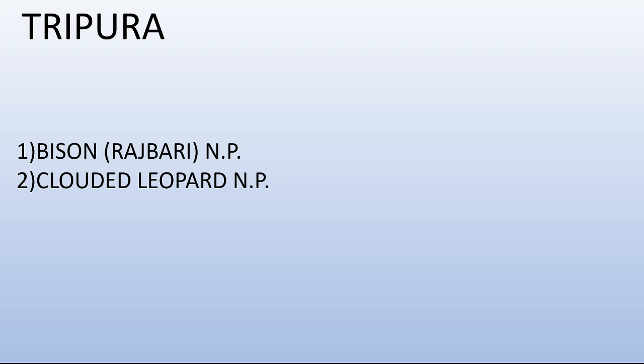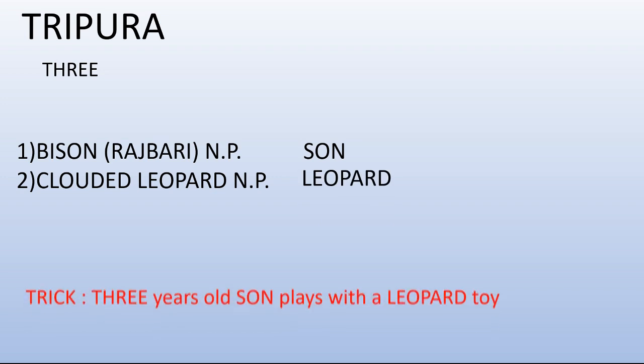We will write Tripura as '3'. We will write 'Sun'. I have brought Bison and Clouded Leopard. Now let's see the trick: '3 years old Sun plays with a Leopard Toy.'